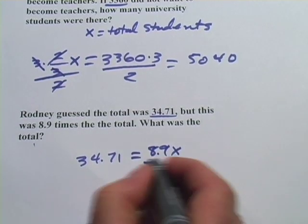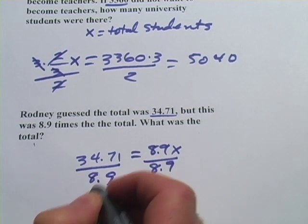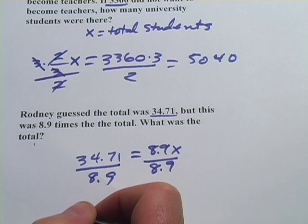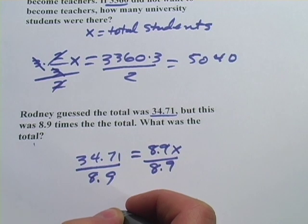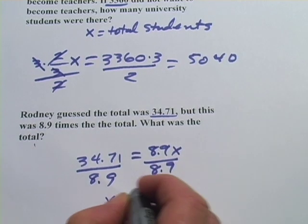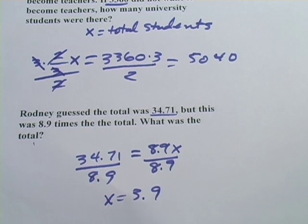divide by 8.9, so 34.71 divided by 8.9, and I get 3.9. So that's a little practice with word problems involving fractions and decimals.